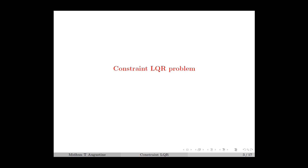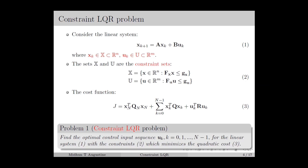Let us start with the constrained LQR problem, in which we consider the linear system in discrete time as given in equation number 1. Compared to discrete LQR, the main difference is that the state and controlled input are constrained. The state xk belongs to the set X, which is a subset of R^n, and the controlled input uk belongs to the set U, which is a subset of R^m.